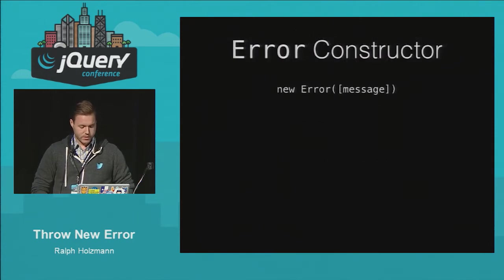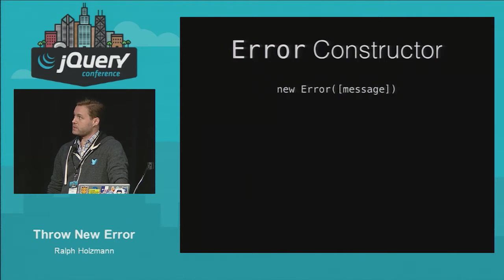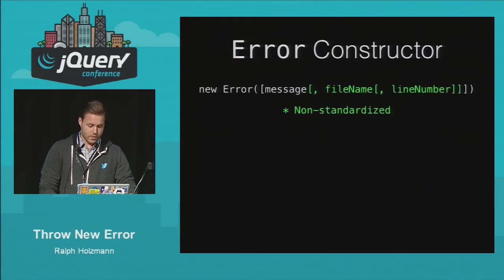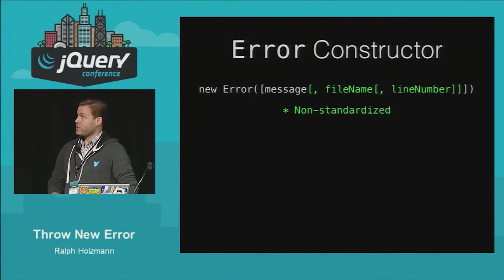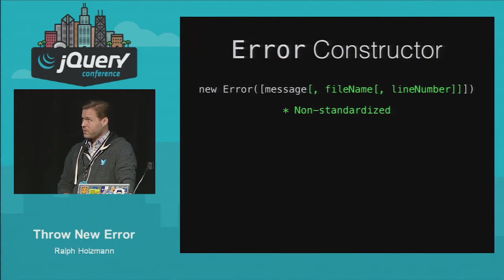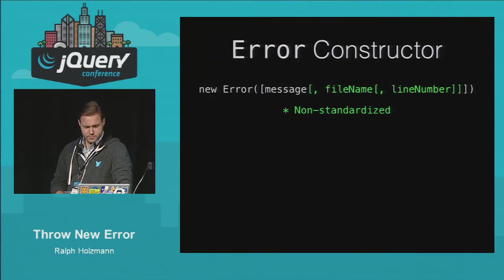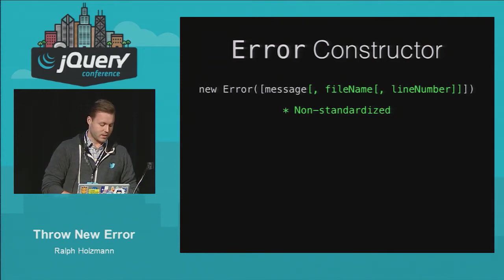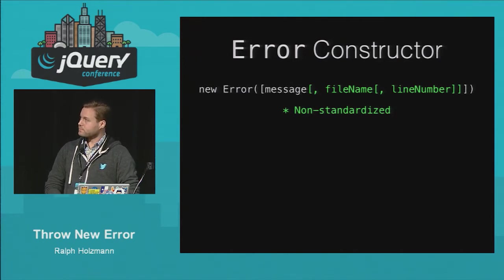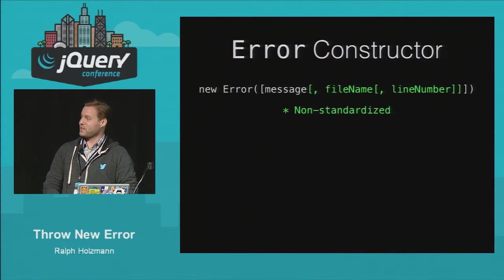If we take a look at the error constructor, it's pretty simple. You just create a new one and pass it a message of whatever is going wrong — whatever happened that you expected not to happen. We also have some non-standardized things you can pass in: a file name and line number, which to everyday development doesn't seem super useful. But you can imagine if you're writing a CoffeeScript compiler or some kind of transpile-to-JS, you could scan through your code, find all the new error objects being created, and do almost like different inline source maps to the files being used. But it's non-standard — it's in Firefox only — and standardizing new things on the error object is not a high priority, so maybe a little while until we see that.